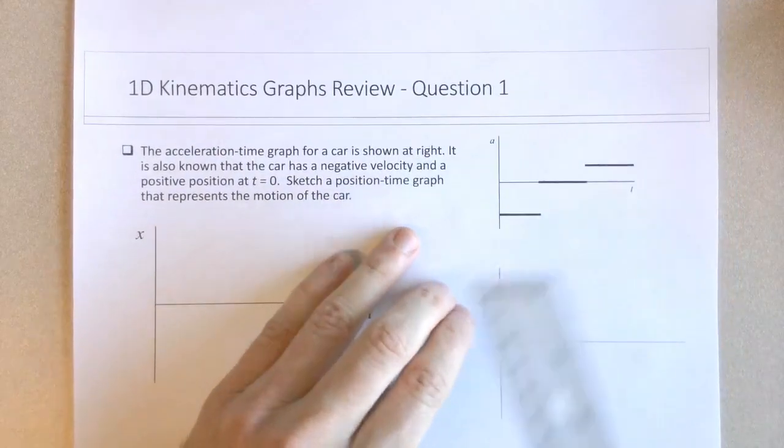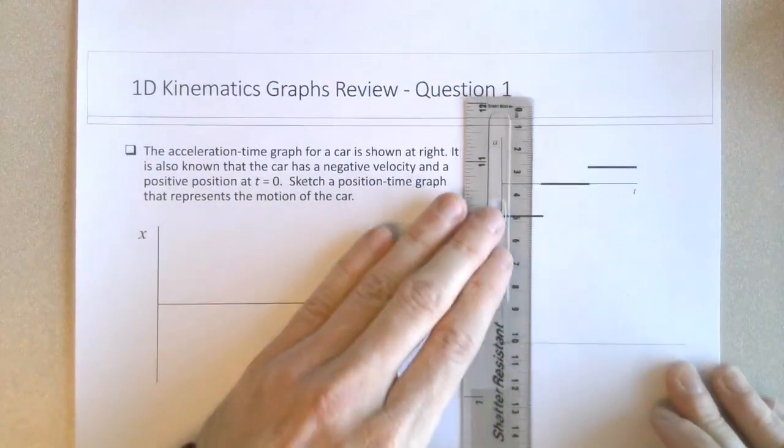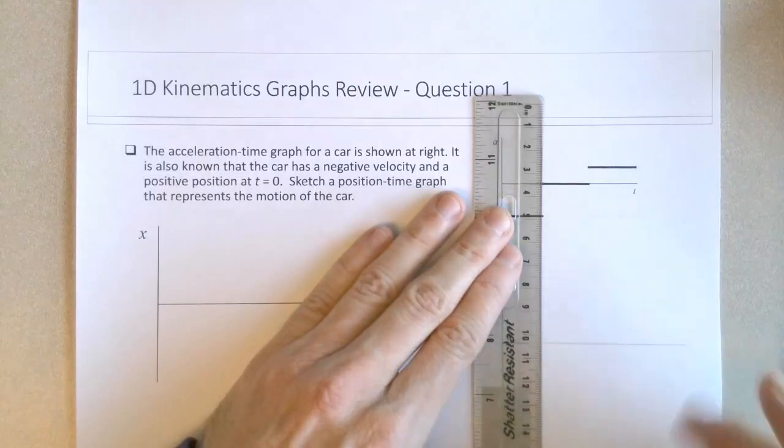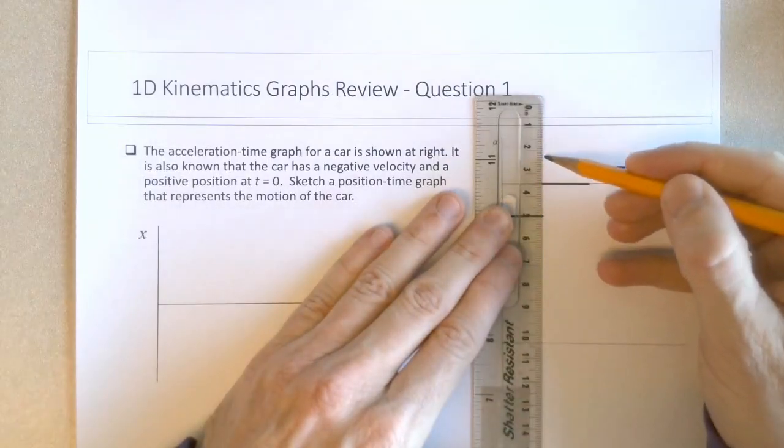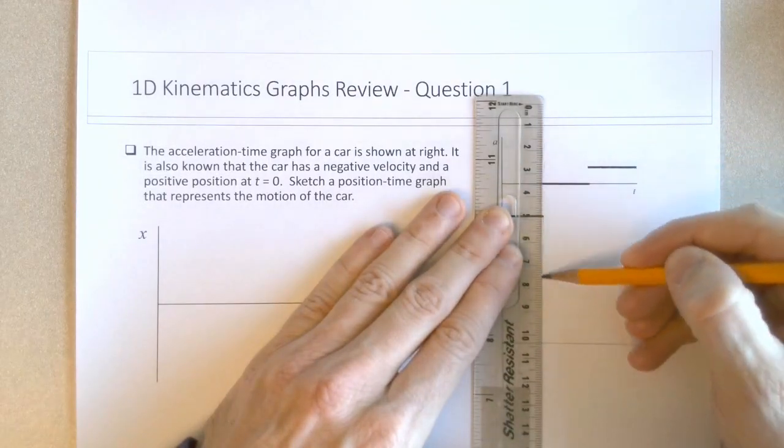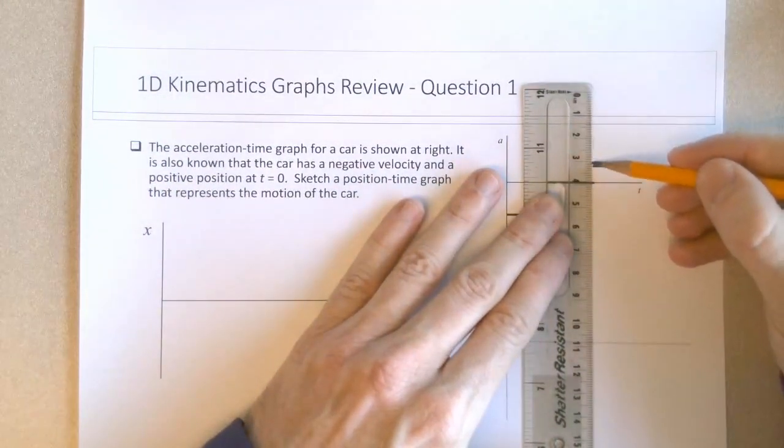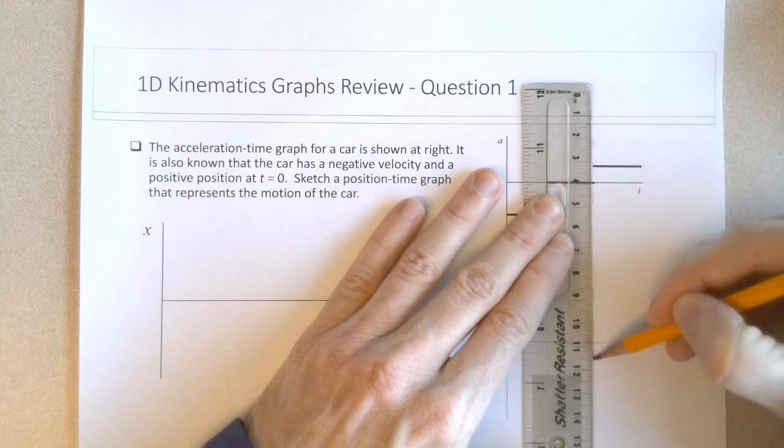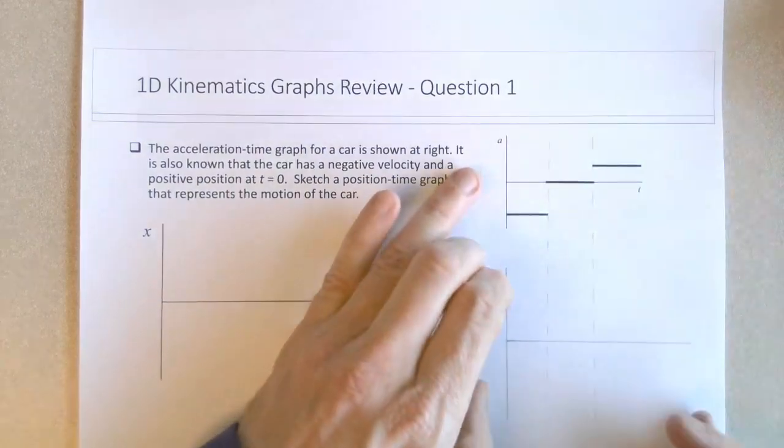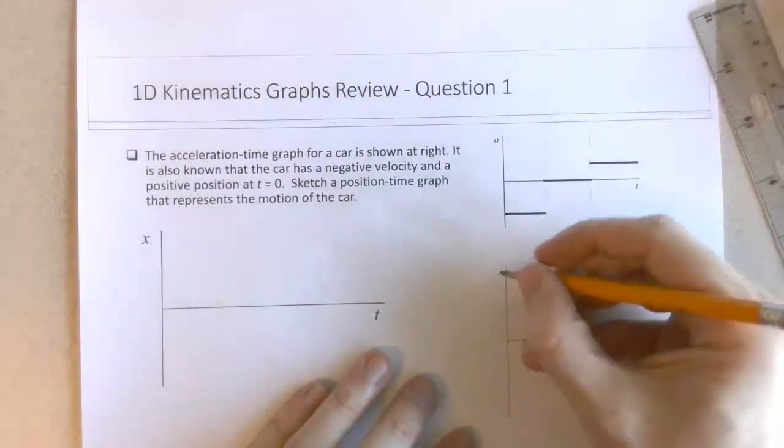And then I would drop some lines down for the time to correspond to these acceleration changes. So we can make it consistent with this At curve. So we're told this is Vt.